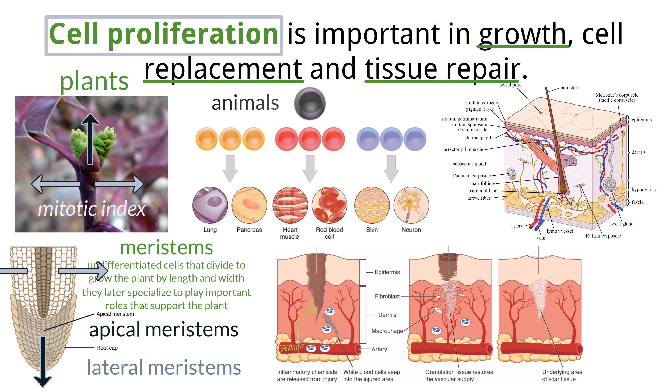In animals, the undifferentiated cells are found in the zygote. These cells will make thousands of copies by mitosis and begin to organize themselves into layers in a hollow sphere called the embryo. Differentiation will then occur where cells will become specialized tissues, such as muscle, lungs, and intestine.